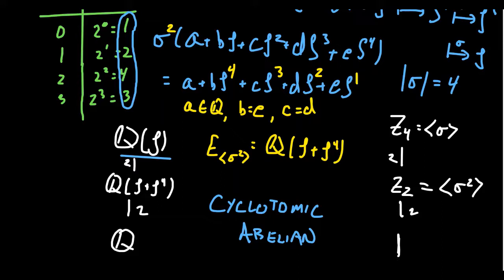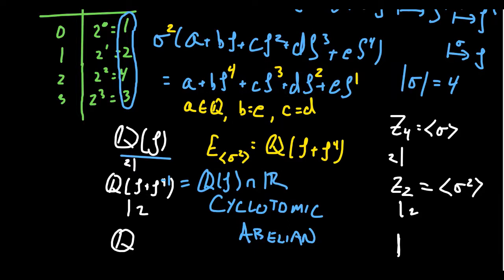Cyclotomic extensions always give a splitting field, and they always contain a degree 2 extension. In general, rather than zeta + zeta⁴, you think of it as zeta + zeta to the negative one. This field can also be expressed as Q(zeta) intersected with the real numbers—the maximal real subfield. When adjoining complex roots of unity to Q, looking at the intersection with the real numbers gives a degree 2 extension. Looking at this maximal real subfield will be a very useful technique when we explore Galois groups in the next lecture.